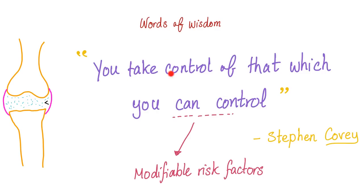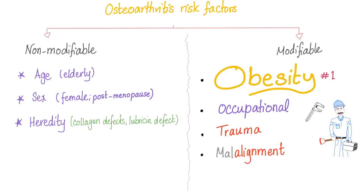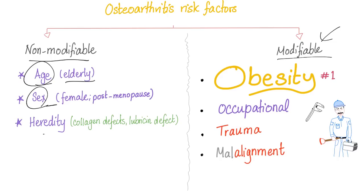Osteoarthritis risk factors are divided into non-modifiable and modifiable. Non-modifiable factors — things you cannot change — include age, sex, and heredity.